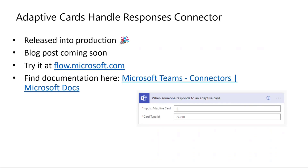If you want to check it out at flow.microsoft.com, you will need to create an MSA account if you don't have one already. You can find the documentation with the link sent in the chat, and for people watching via YouTube or other medium, links will be in the video description. The connector takes an input adaptive card and a card type ID chosen by you, which is used to track and handle responses with that adaptive card in Microsoft Teams.